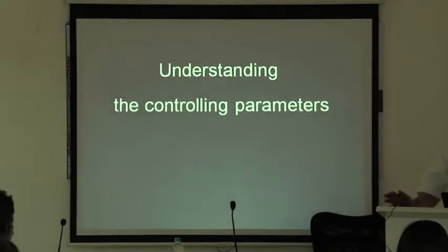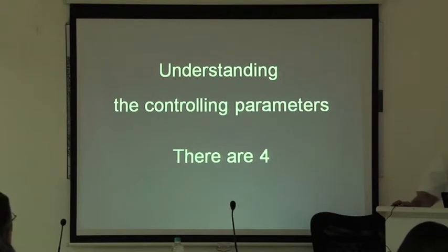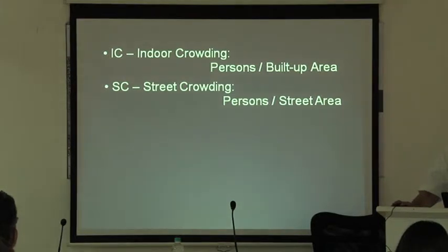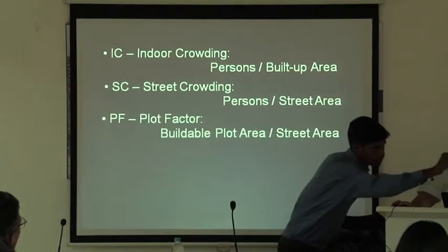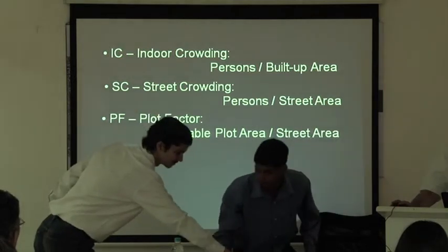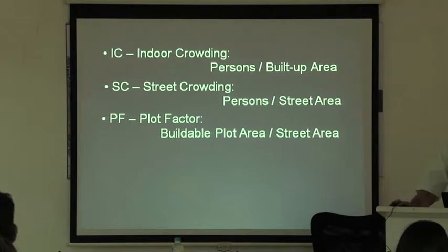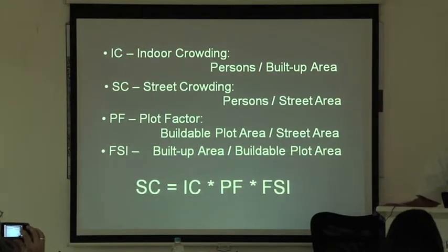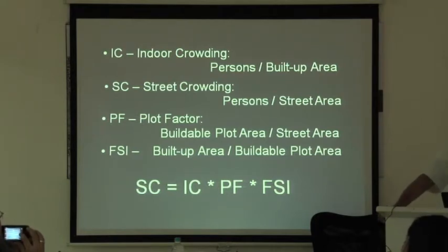If we try to understand the controlling parameters, there are actually four. The first is indoor crowding — persons per unit of built-up area. Next is street crowding — the count of persons per unit of street area. The third is plot factor — buildable plot area upon the street area. And FSI is built-up area upon buildable plot area. These are related in a very interesting way: street crowding equals internal crowding times plot factor times FSI.